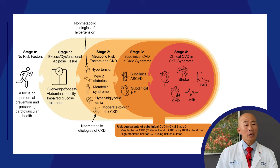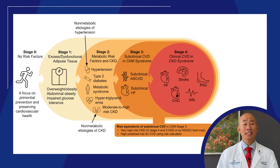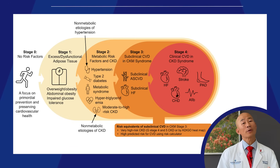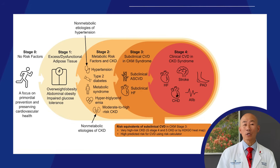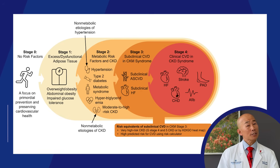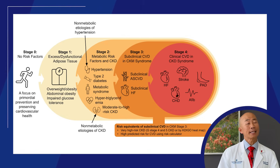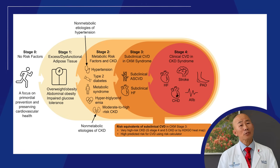To help us better understand and intervene, the American Heart Association released the 2023 Presidential Advisory, proposing a staged approach to CKM management. Stage 0 is no CKM risk factors. Stage 1 describes excess or dysfunctional adiposity — patients may be overweight or obese with elevated glucose or A1c. Stage 2 are metabolic risk factors and CKD, so think type 2 diabetes, hypertension, hypertriglyceridemia, and metabolic syndrome.